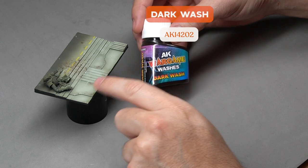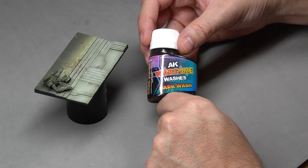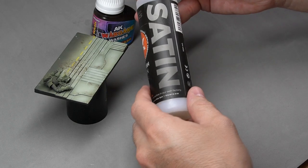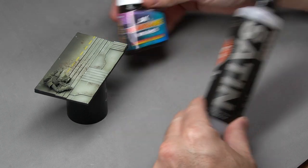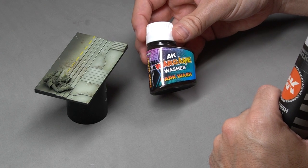We'll use dark wash to add even more depth to the floor panels. To do this, the first thing we'll do is set and varnish the entire surface. This will help the product slide more and allow it to seep into all the crevices using capillary action.